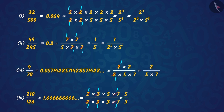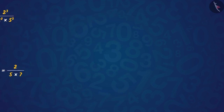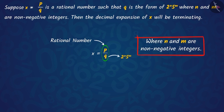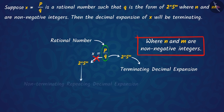Thus, we can say that the inverse of the theorem we just studied is also true, which we can formally write as follows. Suppose x equals p upon q is a rational number such that q is in the form of 2 raised to n multiplied by 5 raised to m, where n and m are non-negative integers. Then the decimal expansion of x will be terminating. And if q is not in the form of 2 raised to n multiplied by 5 raised to m, then the decimal expansion of x will be a non-terminating rational number.